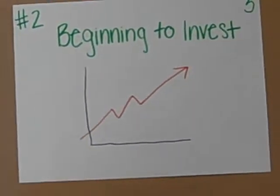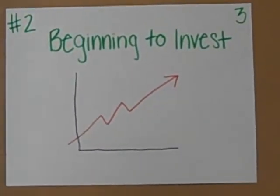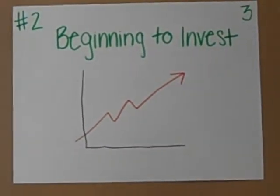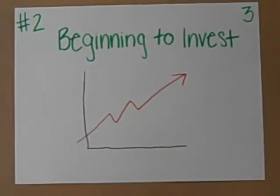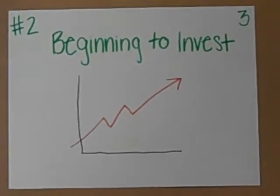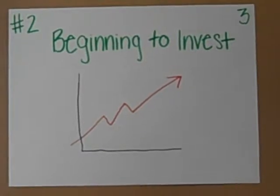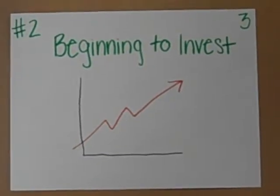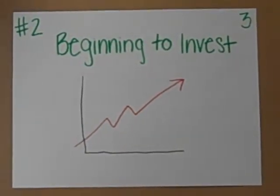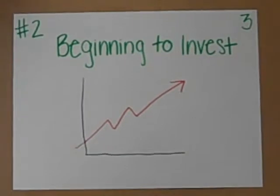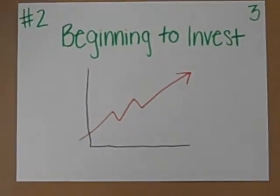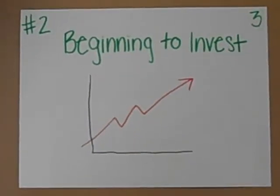Number two: beginning to invest. After you've established a stable put and take account, you can begin to invest. At first, most people invest in low risk and return investments, such as bonds or mutual funds. Liquidity is also kind of low.